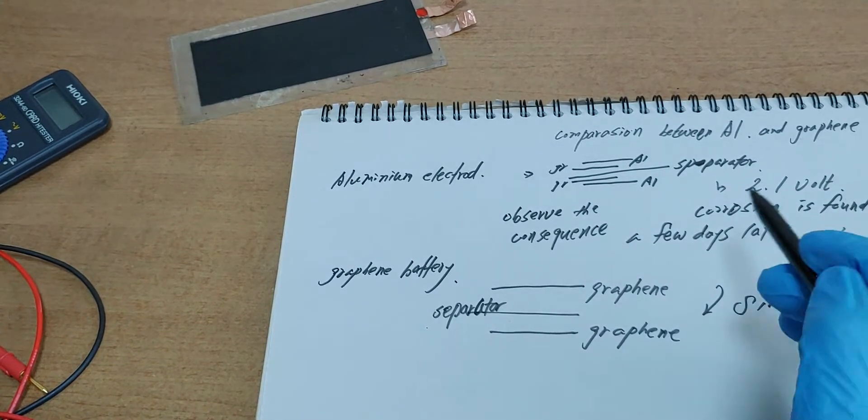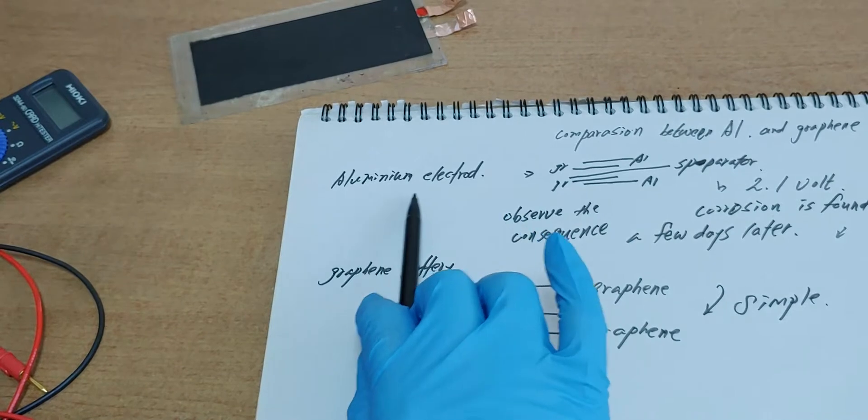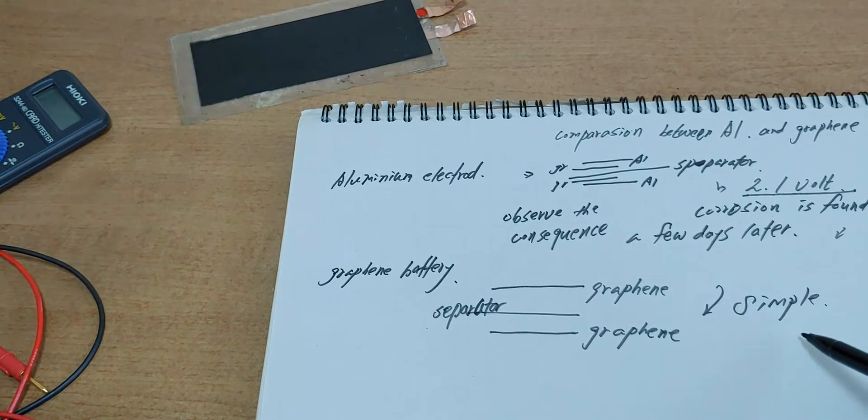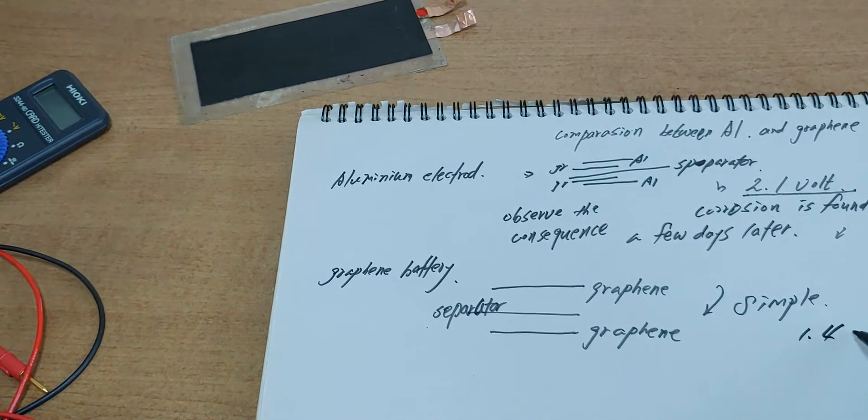For aluminum power, if we use aluminum, 2.1V is found. Graphene battery, 1.4V is found.